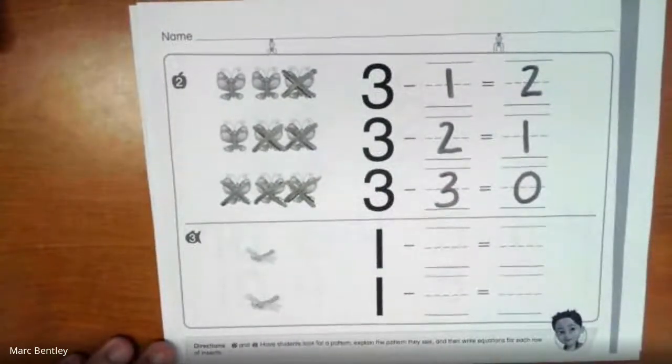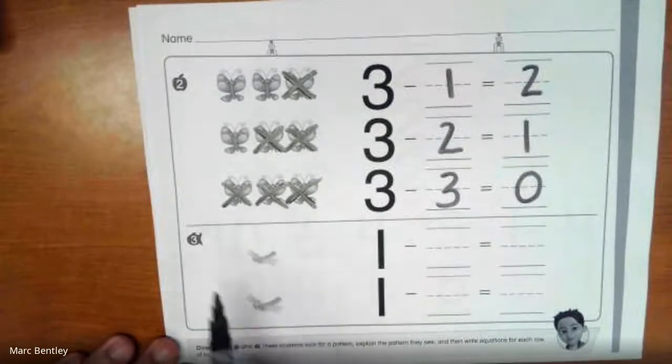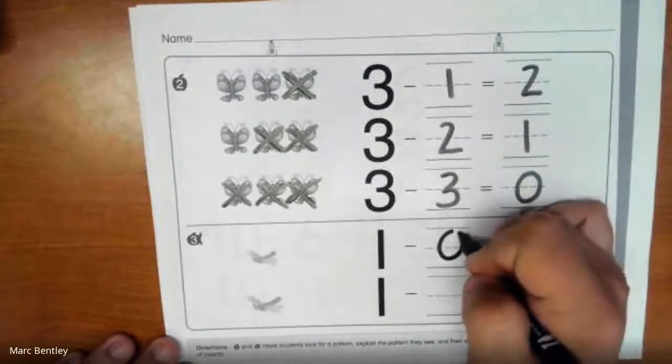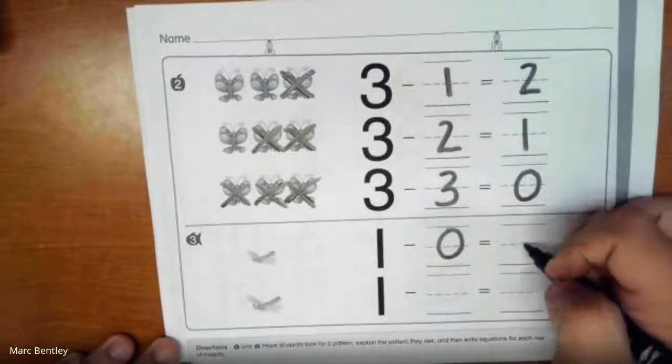So here we have some kind of insect. We have 1. We're just going to keep this 1 here. So it stays so we're not taking anything away. 1 minus 0 equals... Well, we've still got it. So we still have 1.